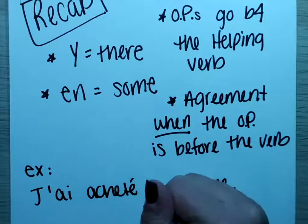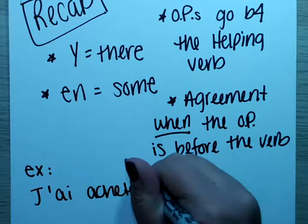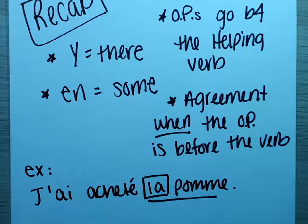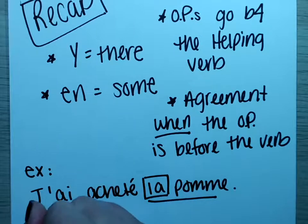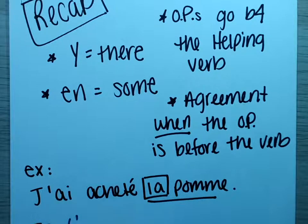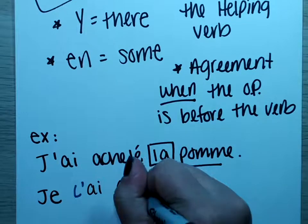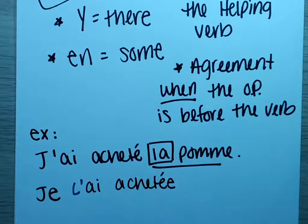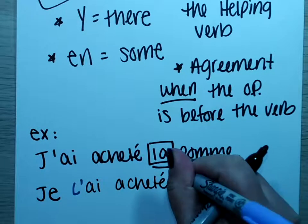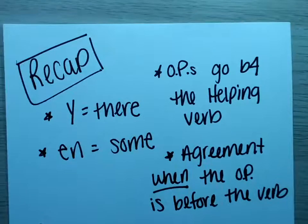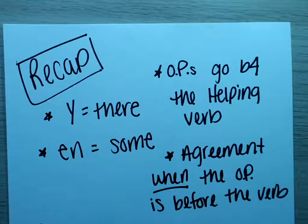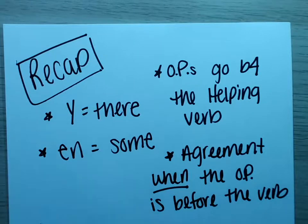Let's do one last example: 'I bought the apple' — j'ai acheté la pomme. La pomme gets replaced with la. In our finalized sentence we have j'ai la achetée — with an extra e on the end for la pomme. Hopefully this recap is helpful. The main things to remember: y means 'there,' en means 'some,' and your object pronouns go before your helping verb in the passé composé. C'est tout et à plus!